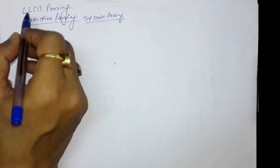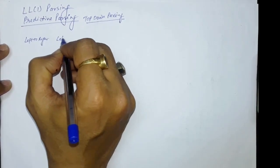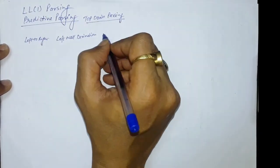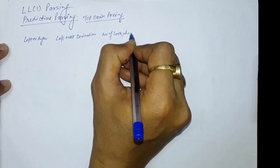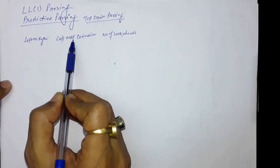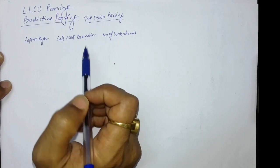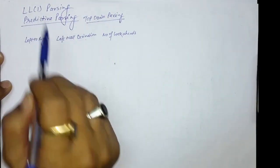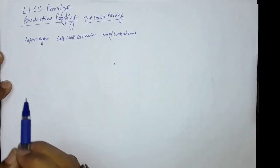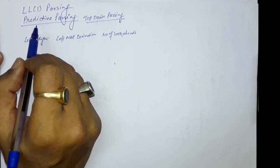In LL1: the first L means left to right, the next L means leftmost derivation, and the one means number of lookaheads. So in LL1 parsing, we parse the string left to right, we do the leftmost derivation — which we discussed in previous lectures is nothing but top-down parsing — and the number of lookaheads while doing the parsing is one. It means we predict only one symbol, what the next symbol may be. That is why this is also known as predictive parsing.